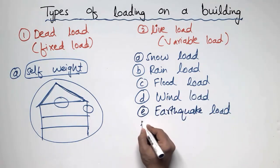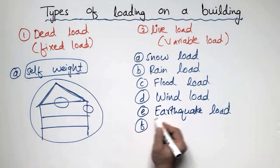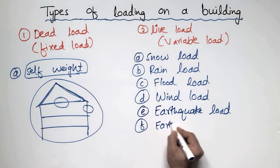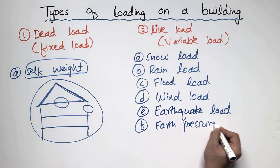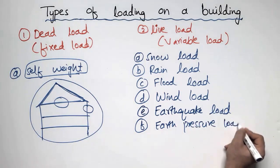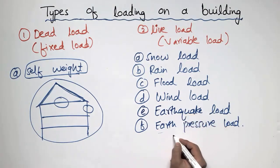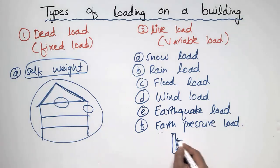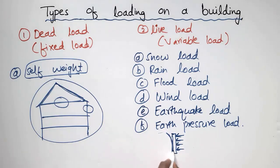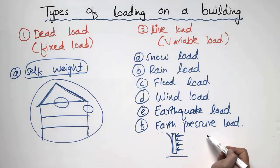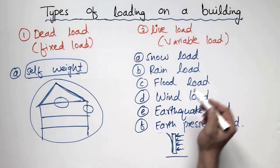The sixth type of live load is the earth pressure load, also called the side load. This is the load acting on a retaining wall. When you build a retaining wall, the load coming from the earth or from the side acts on your building and deflects it. So there is also a load which we call the earth pressure load or the soil load.